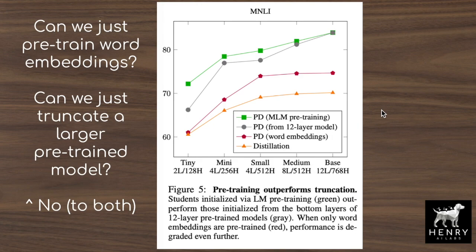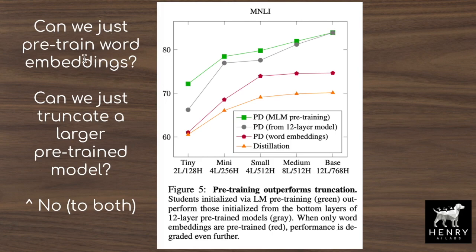The first question explored is: can we just pre-train the word embeddings? In transformer models, word indices look up into an embedding table — a matrix of vocabulary size by hidden dimension, with 30,000 entries of distributed vectors of, say, 128, 256, or 512 dimensions. The paper shows that only training the word embeddings doesn't work as well as pre-training the entire transformer model. Even adding a one-transformer-block layer ahead of the word embeddings, where gradients flow heavily into the embeddings, doesn't perform as well as pre-training the whole transformer.